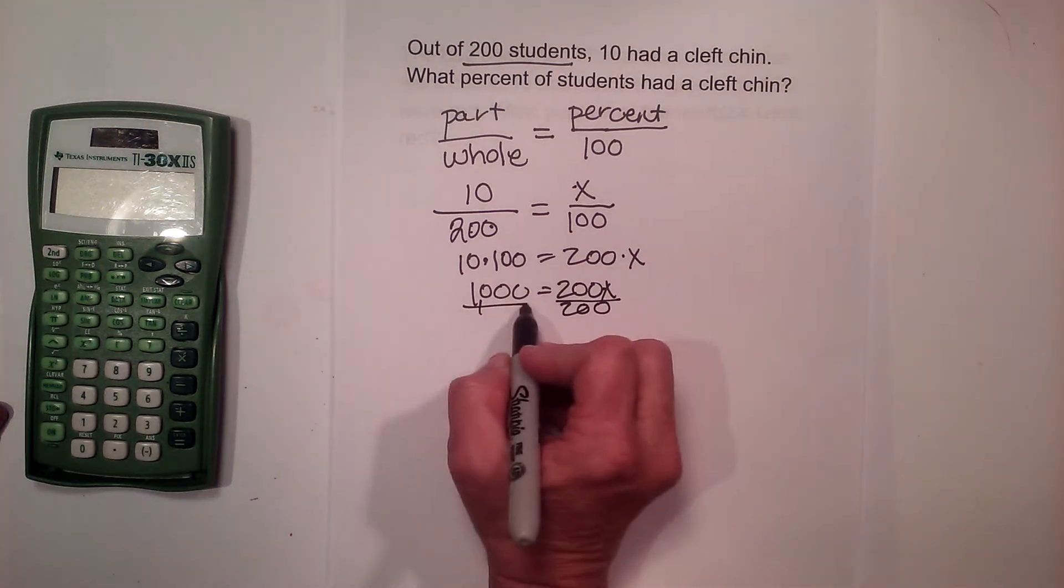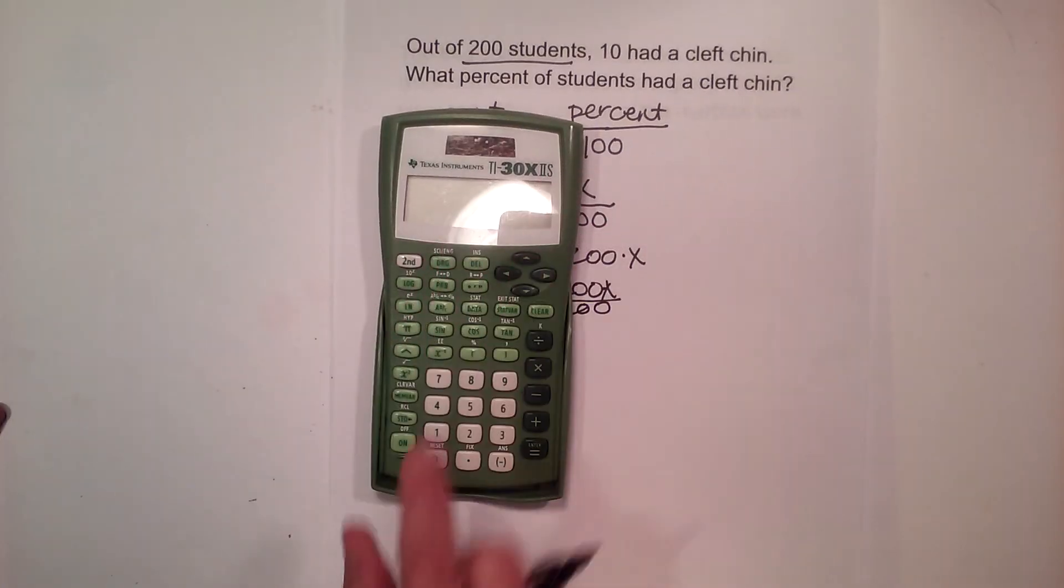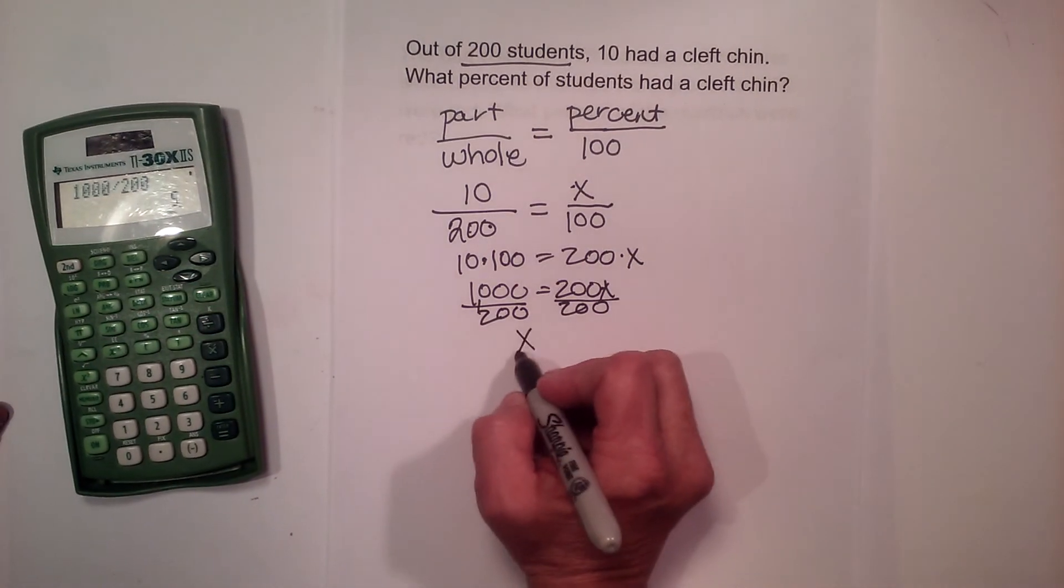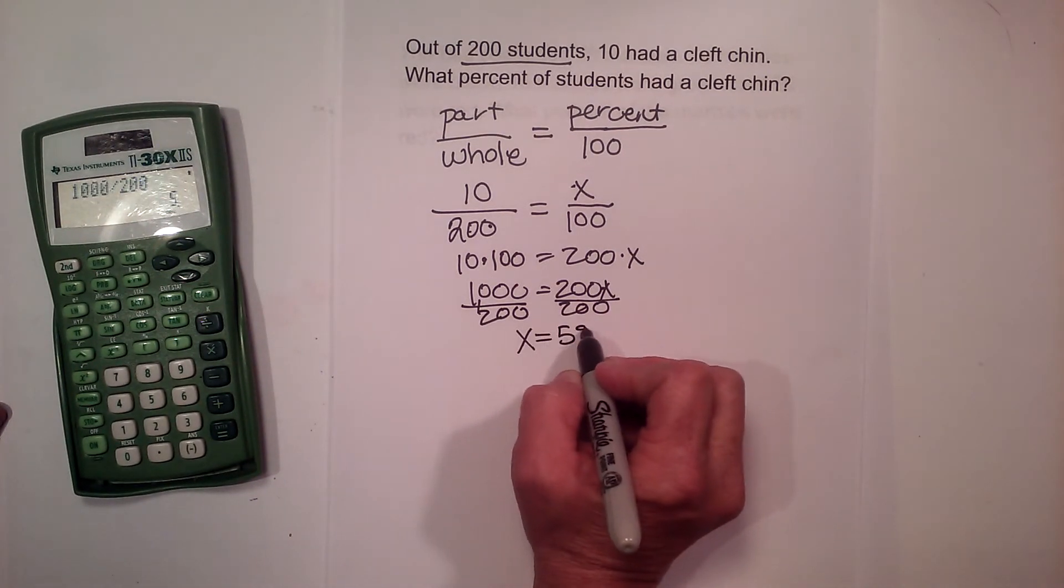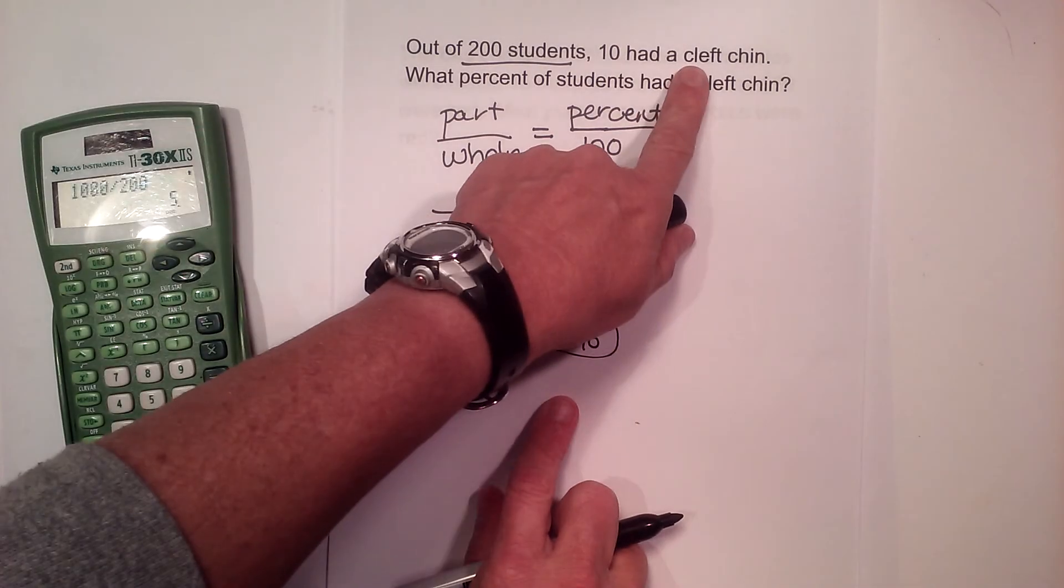So let's divide by 200. Let's grab our calculator and take 1000 divided by 200, and that gives us 5. So that means x is 5%, so that means 5% of our students have a cleft chin.